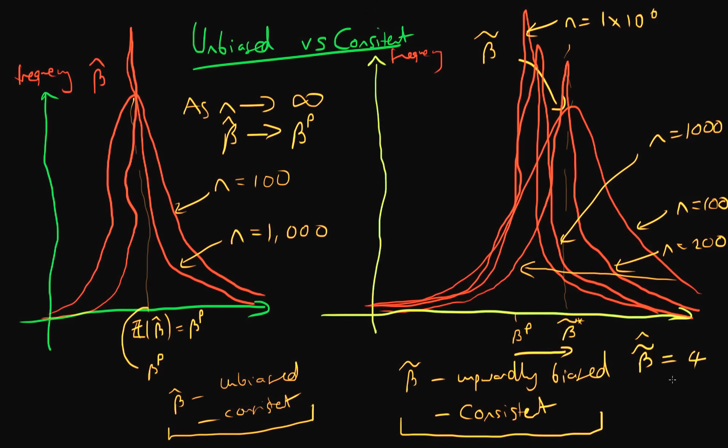For example, I can postulate an estimator beta tilde hat which was just equal to four. So this function, whatever value of the sample you feed into it, it just outputs a value of four. This isn't very representative of what's actually going on in the population because it just outputs a constant - it's completely independent of the sample. If this didn't happen to be exactly what the population parameter was, it would both be biased and inconsistent.